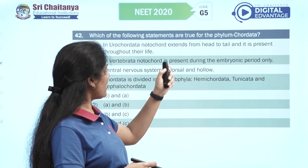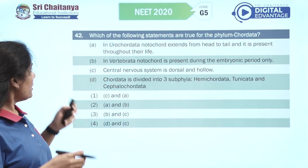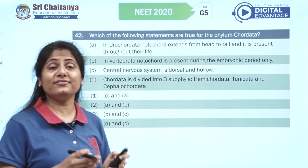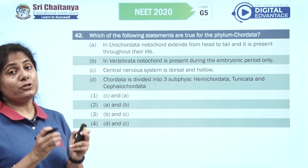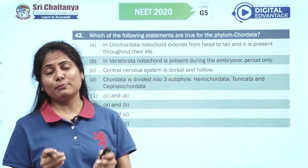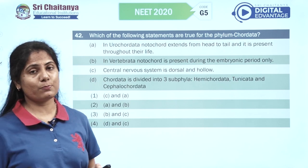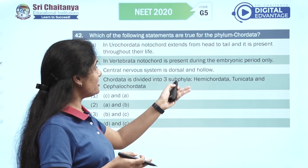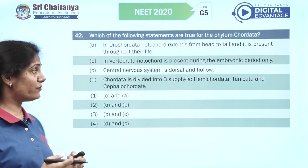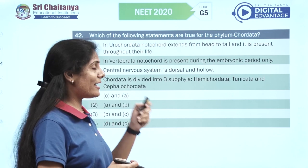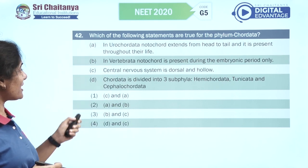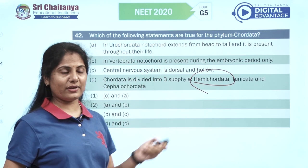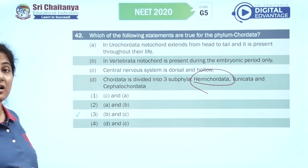Which statements are true for phylum Chordata? In Urochordata, notochord extends from head to tail — this is a problem, as Urochordata exhibit retrogressive metamorphosis and notochord is present only in the larval tail, not throughout life — so that is wrong. In Vertebrata, notochord is present during embryonic period and later replaced by the vertebral column. Central nervous system is dorsal and hollow. Chordata is divided into three subphyla: Hemichordata, Tunicata, and Cephalochordata — that's the problem area. So B and C, which is the third option.